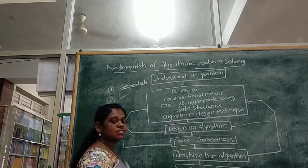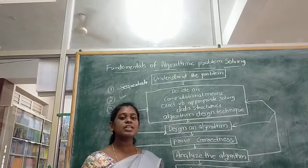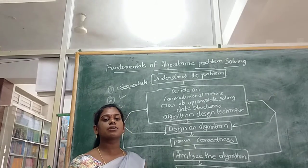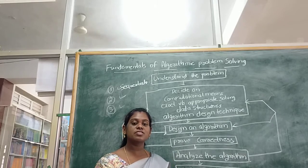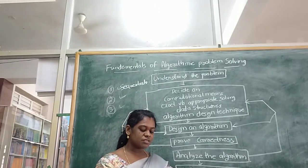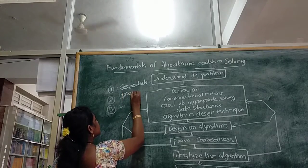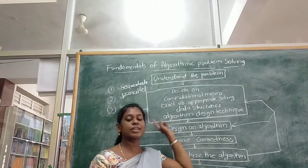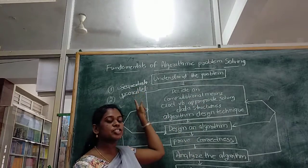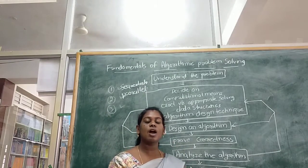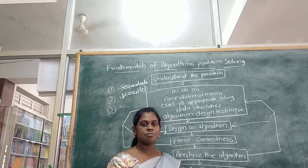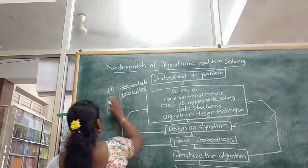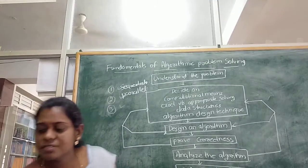In some devices, instructions are executed in parallel — at a time it will execute the first instruction and third instruction simultaneously. Those machines are called parallel algorithms. So for computational means, you have to check in which device you are going to execute the algorithm — sequential or parallel — and based on that you have to design the algorithm. That is the second step.